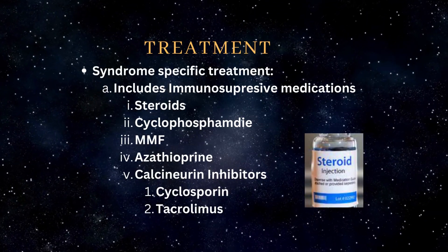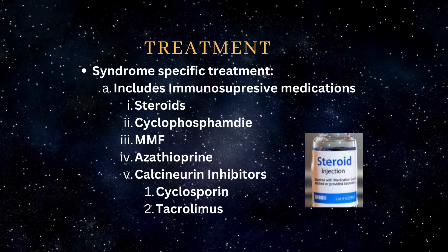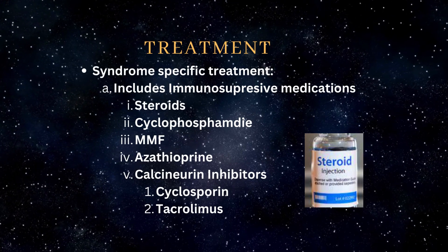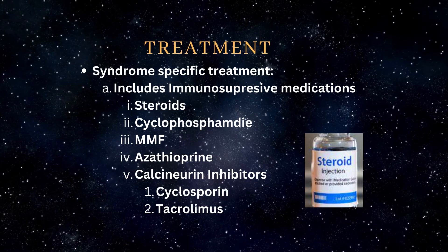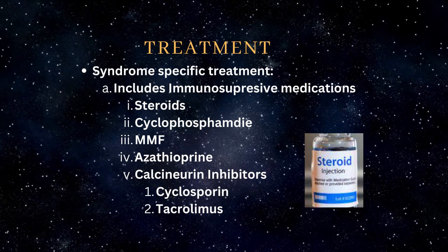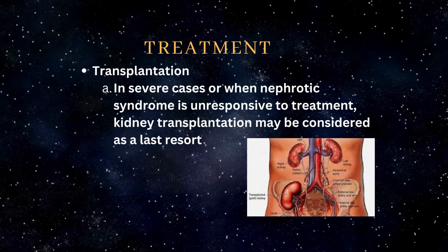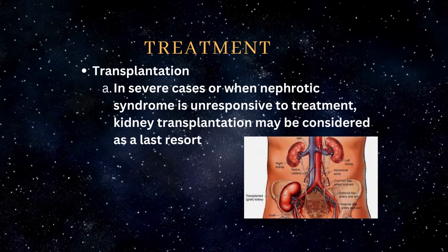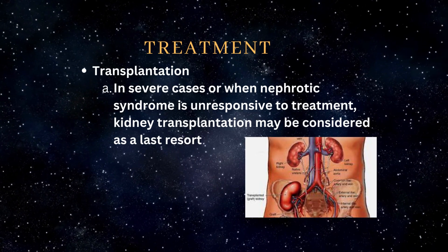Syndrome-specific treatment varies according to the exact type of syndrome and may include immunosuppressive medications like steroids, cyclophosphamide, MMF, azathioprine, and calcineurin inhibitors including cyclosporine and tacrolimus. Another mode of treatment is transplantation. In severe cases or when nephrotic syndrome is unresponsive to treatment, kidney transplantation may be considered as a last resort.